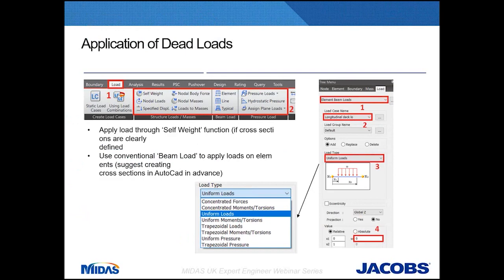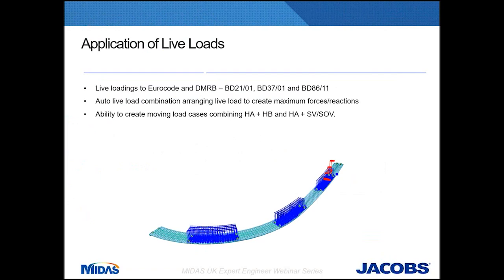We also had to apply a specified displacement to replicate the jack-lifting process, to check whether the effects on the superstructure were significant. It should be remembered that assessment of any detrimental effects on the structure when it is lifted must be checked as part of the bearing replacement scheme. Bear in mind that when you create a specified displacement at a node, it automatically creates a support at the same location. Midas Civil introduced assessment code BD21/01 to the already existing Eurocode and BD37/01 design codes. For this scheme, BD37/01 and Eurocode were used for bearing design, and BD21/01 was used for assessment of the deck during jacking.